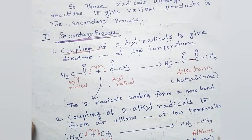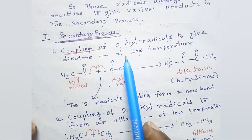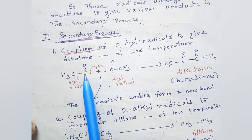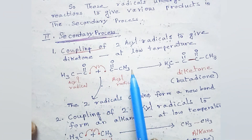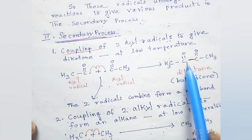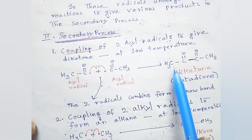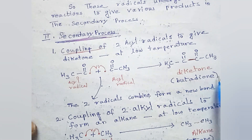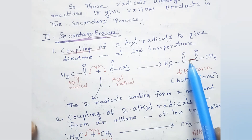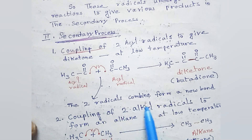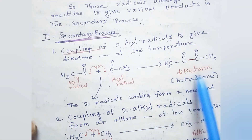Secondary process: coupling of two acyl radicals to give a diketone at low temperature or room temperature. CH₃–C(=O)• plus •C(=O)–CH₃ — this radical and this radical combine to form a new bond. This product is a diketone, also called butanedione. This new bond is formed because of the combination of the two acyl radicals.